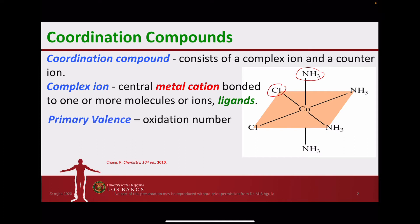The first is referred to as the primary valence, which is simply the oxidation number of the transition metal — the charge of the metal if you remove all the ligands from it. In this case, ammonia is a neutral molecule, whereas chloride has a negative one charge. Since this complex is neutral, cobalt has a positive two charge, so its oxidation number is two, written as cobalt(II).